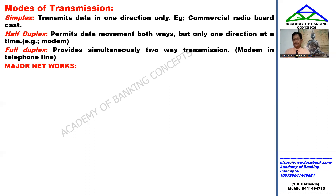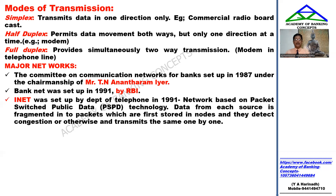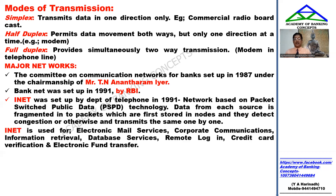Full duplex allows simultaneous two-way communication, like a highway with two lanes. This is generally useful in the case of modems and telephone lines.